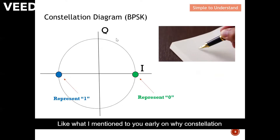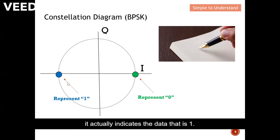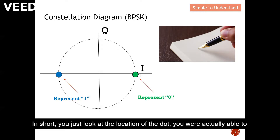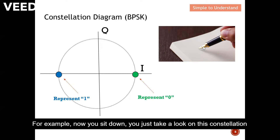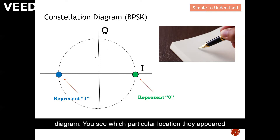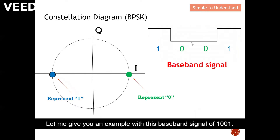When you see this blue dot it indicates the data is a one. This is why the constellation diagram is very useful for digital data. If the dot appears here, it indicates data zero; if it appears over there, it indicates data one. You just look at the location of the dot and write down whether it is a one or zero. For example, looking at this constellation diagram, you see which location the dot appears and write down the digital data.